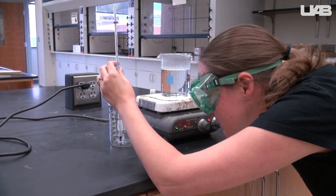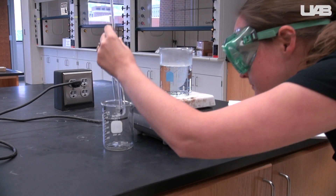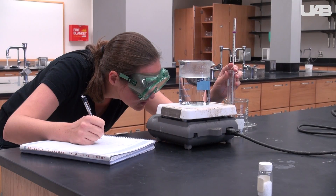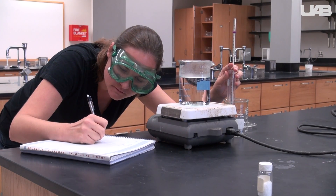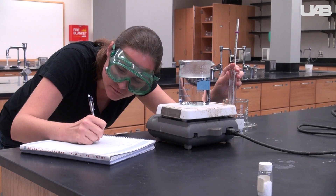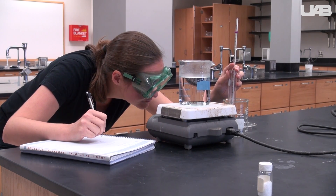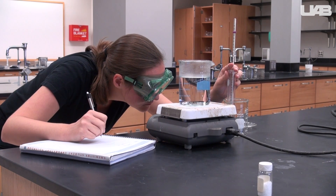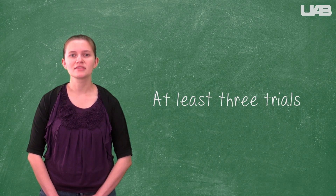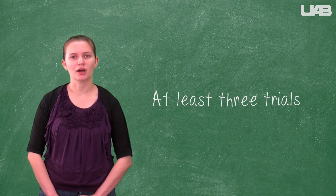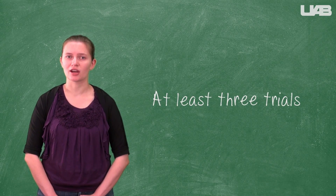Record the temperature every three seconds as you did for the pure solvent. When you see the first crystal form, record the temperature in your data table. Record the temperature two or three more times and see if it remains constant. You will repeat this heating and cooling process for a total of at least three trials.